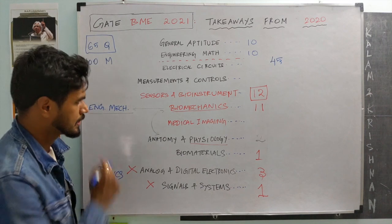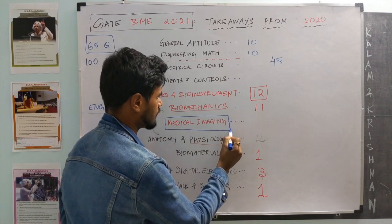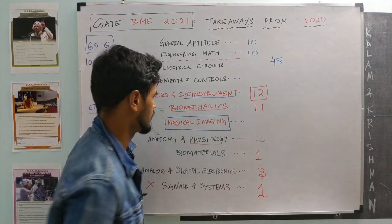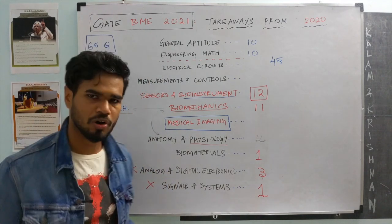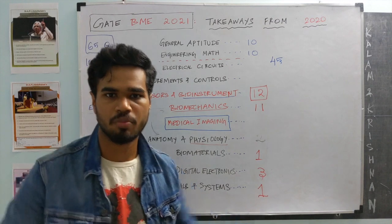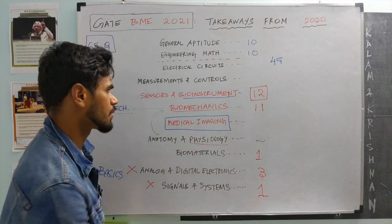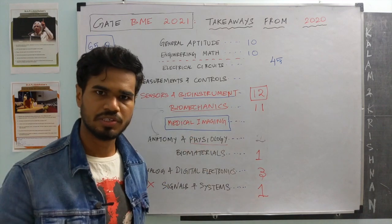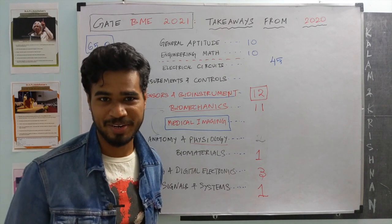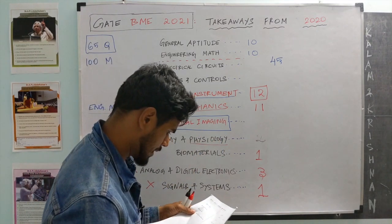One of the most important topics had many questions from medical imaging. The questions came from both the physics side and the bio instrumentation side. From the physics side, there were deep questions on MRI — different relaxation times in MRI and how MRI parameters affect those relaxation times. On the instrumentation side, there were many questions on medical imaging devices like Doppler ultrasound and fiber optics. A very similar Doppler ultrasound question had appeared in the sample paper I provided.